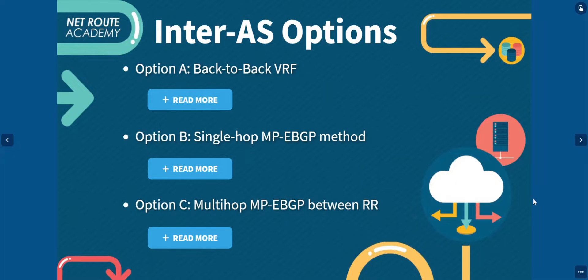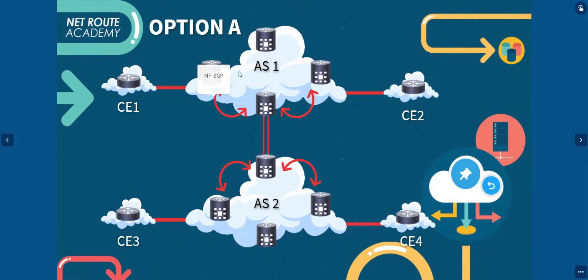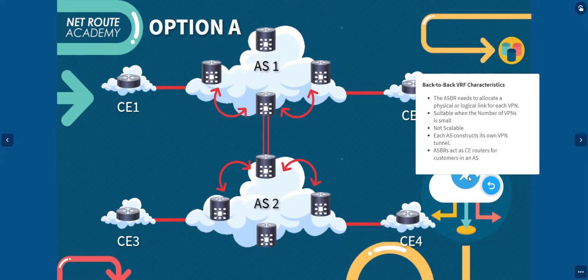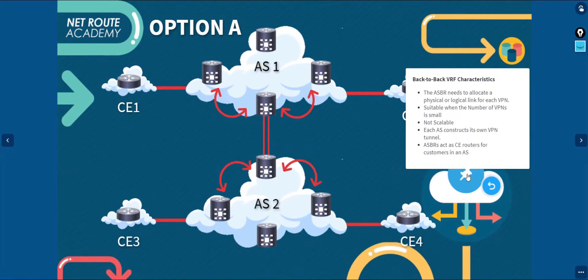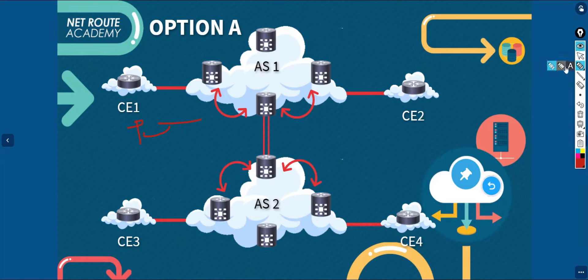Let's start with Option A — back-to-back VRF. This is a simple though less scalable inter-provider VPN solution, especially if you're providing a solution to a customer that has different sites. In Option A, each ASBR will treat each other as a PE and CE. We have this ASBR here and also on the other autonomous system ASBR here. When we say it will treat each other as a PE and CE — that is how it works.